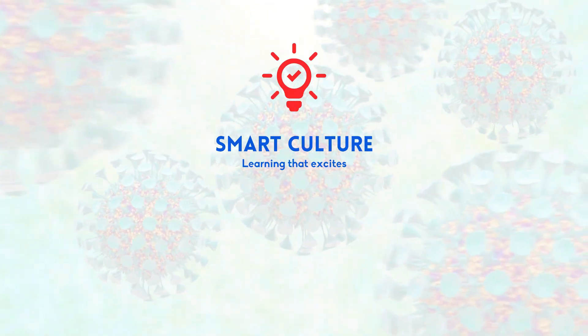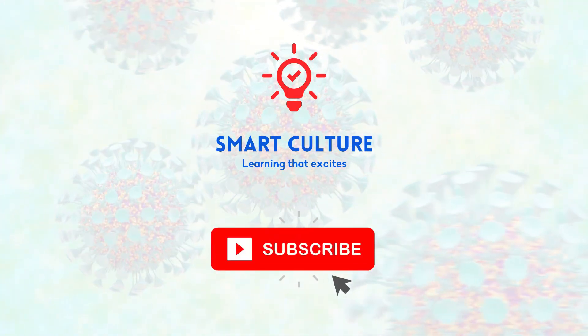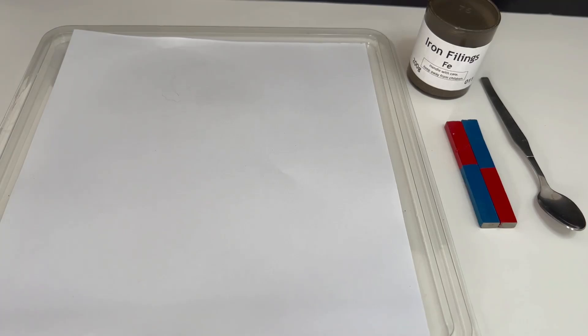Smart culture science. In this experiment we are going to make something invisible visible. We are exploring the magnetic field around a bar magnet using iron filings. Let's get started.